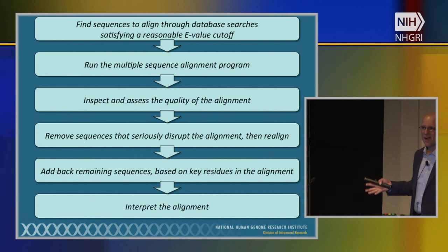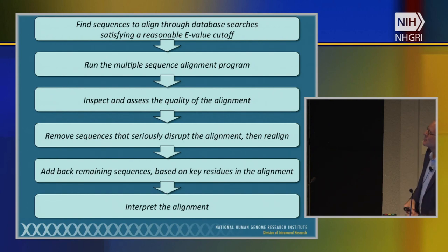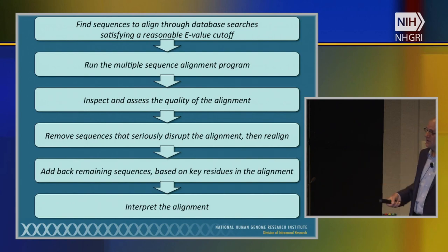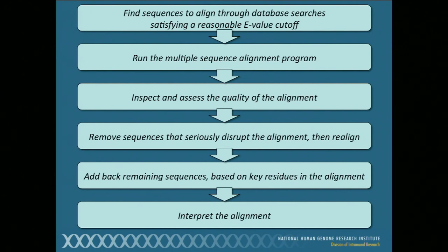Here's the general overview: the first step is finding sequences that satisfy a reasonable E-value cutoff. Then run your alignment method and do inspection. Inspection is important because there's always an element of fine-tuning — the methods are good but not foolproof. Look for sequences that seriously disrupt the alignment by introducing many gaps. Take those out, redo the alignment, then add back the more recalcitrant sequences based on key residues in the alignment.